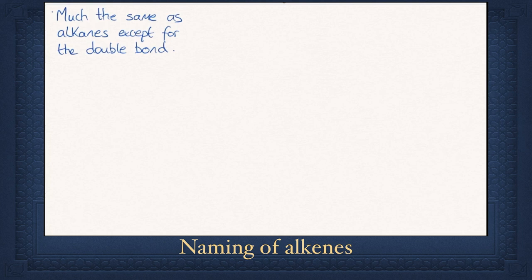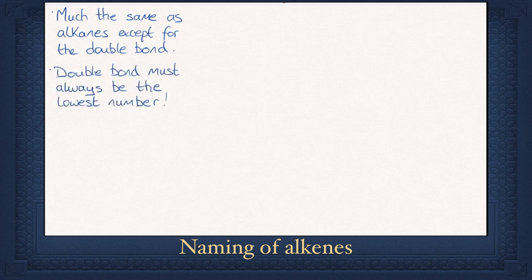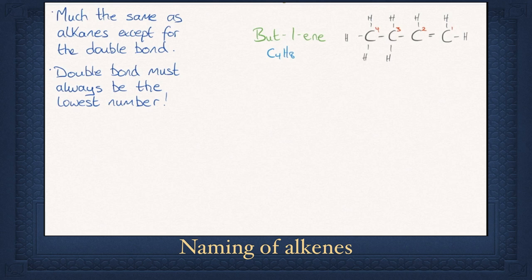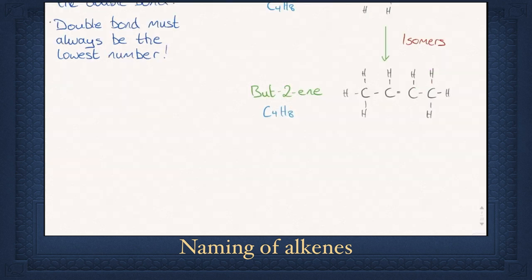Naming alkenes is very much the same procedure as naming alkanes, however you now need to include the double bond. Step 1: number the carbon atoms — the double bond is always the lowest number, even if there are methyl groups attached. Step 2: write down the beginning of the name of the longest continuous chain — in this case it is 'bute'. Step 3: include the location of the double bond. The double bond is on carbon 1, so therefore it is called but-1-ene. Note: if the double bond is on the first carbon atom, sometimes people just ignore the one and it may be called butene instead. This only applies for alkenes with the double bond on the first carbon atom.